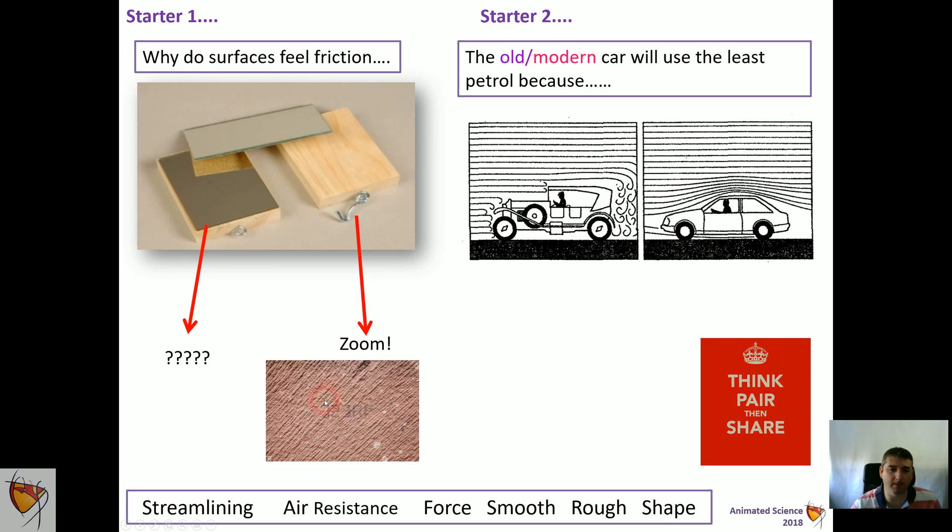But it's what's happening between the two that causes the issues. Also, you could think about old-fashioned cars and the turbulence they create, and modern cars—our modern cars are a little bit more streamlined and what that means.